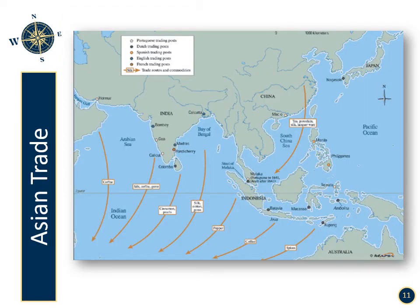Asian trade. The British would later control India and the surrounding areas, even seeking to extend influence over China. The French controlled Indochina and the Dutch controlled Indonesia. Many different spices came from these regions.